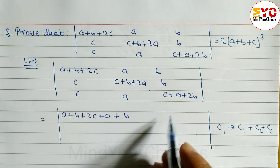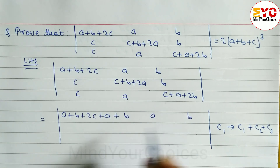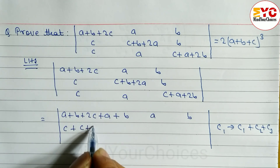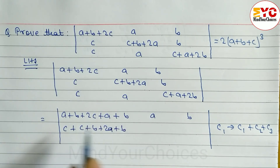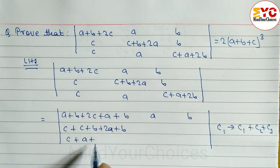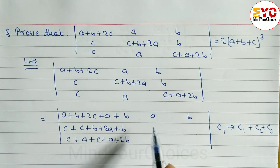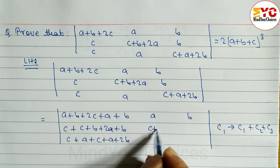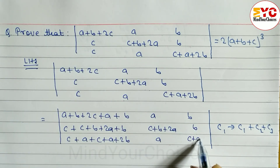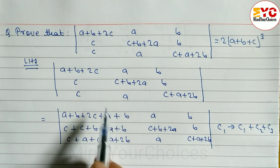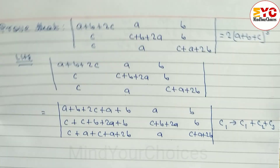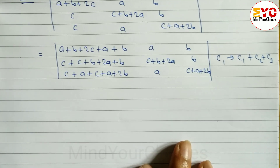After the column operation C1 → C1+C2+C3, in the first column we add all terms. For the second row: C+B+2A plus B plus A. For the third row: C+A+2B. The second and third columns remain the same. Only in the first column have we applied C1 = C1+C2+C3.